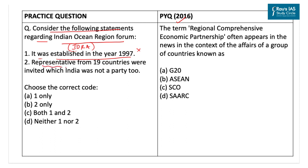The second statement says representatives from 19 countries were invited, to which India was not a party. This statement is correct. Representatives from 19 countries were invited, including Indonesia, Pakistan, Myanmar, Sri Lanka, Bangladesh, Maldives, Nepal, Afghanistan, Iran, Oman, South Africa, Kenya, Mozambique, Tanzania, Seychelles, Madagascar, Mauritius, Djibouti, and Australia. India was not invited. As only statement 2 is correct, the correct code is option B.